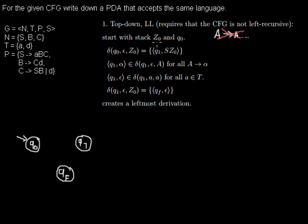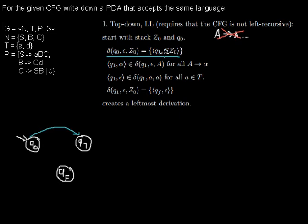At the beginning, there is z0 on the stack — that's our bottom symbol. We want to have a transition from q0 to q1. We want to read nothing from the input, but we want to read z0 from the stack, and we want to push z0 and S onto the stack, so S will be on top. So we read epsilon, pop z0, and push S then z0 — since our top is on the left.